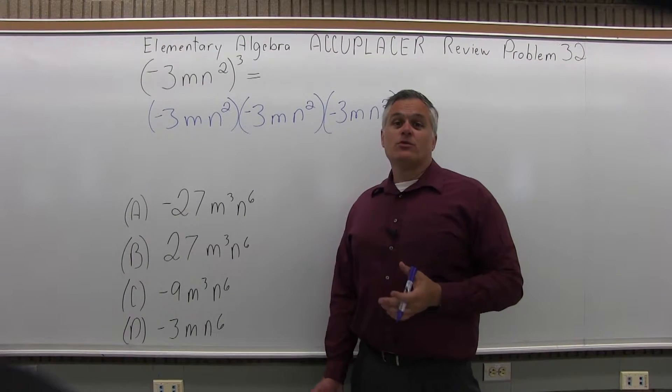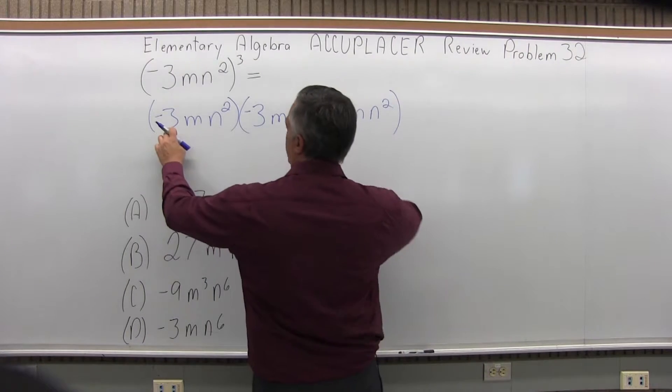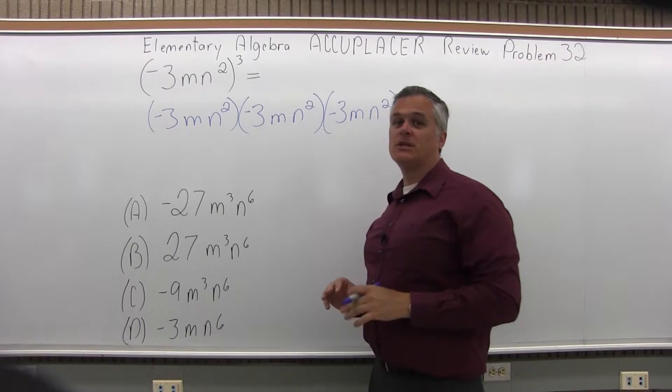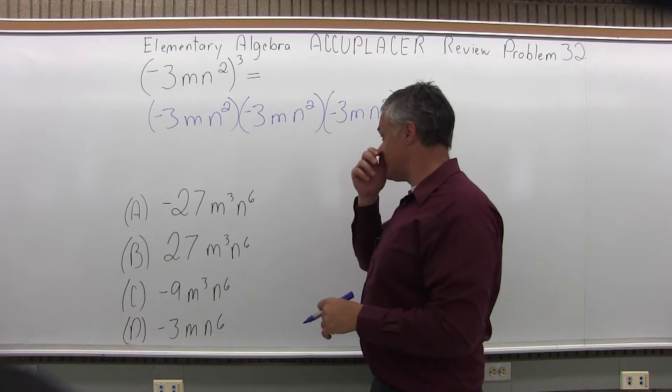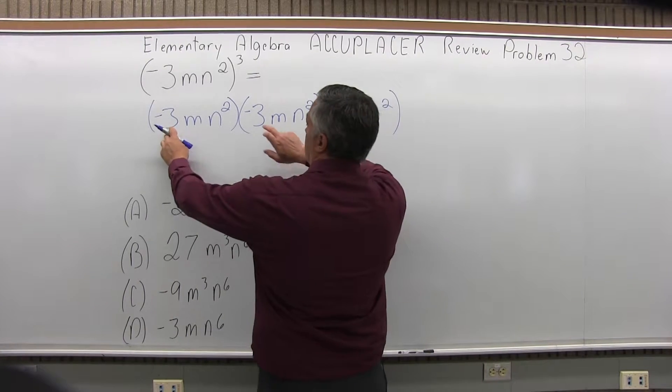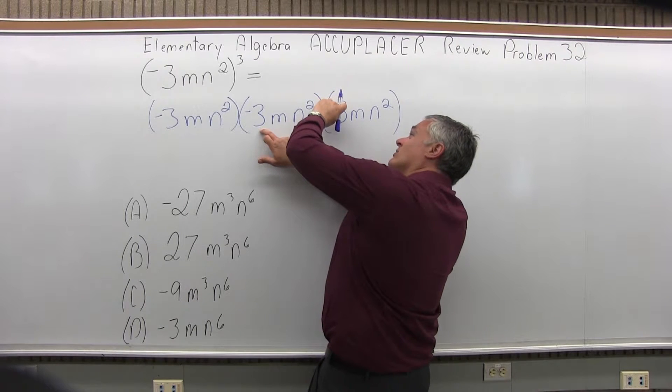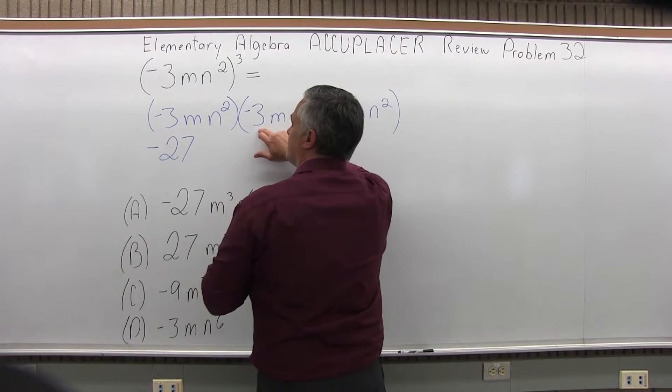So what we're going to do first, focus just on the numbers. Forget the variables. So I'm going to do negative 3 times negative 3 times negative 3. Multiply that out, get an answer, be done with it, then focus on the m's, get an answer and be done with it, then focus on the n's. So negative 3 times negative 3 is positive 9 times another negative 3 is negative 27. So for the number portion of the answer, I have negative 27.